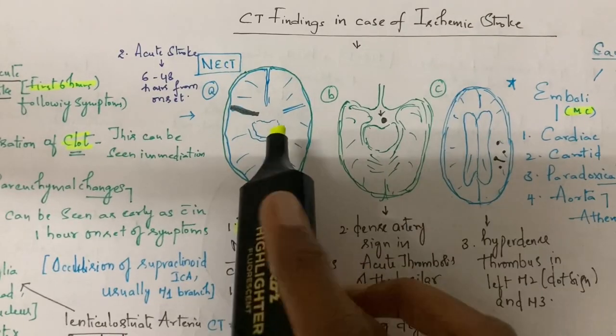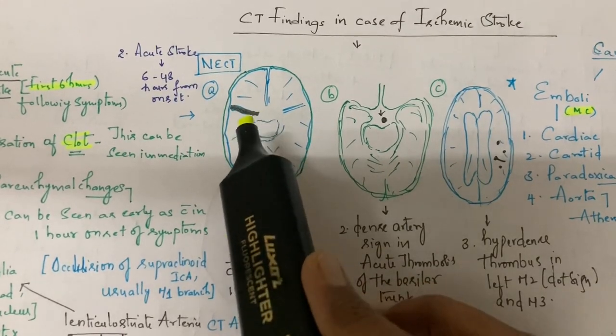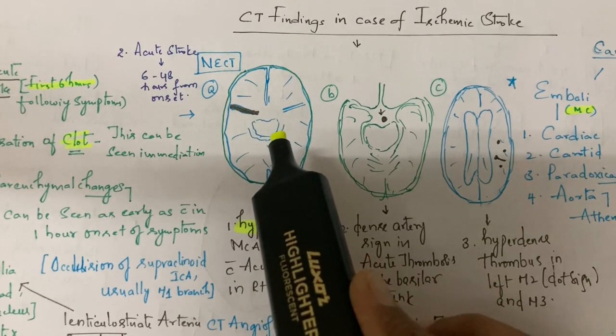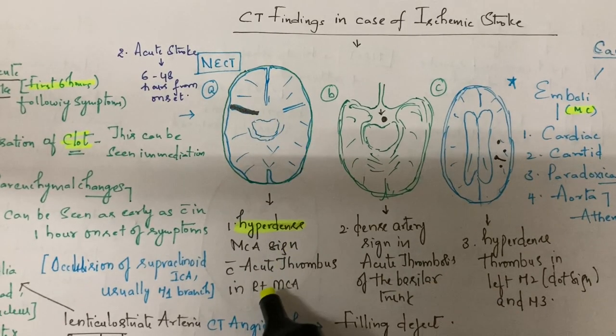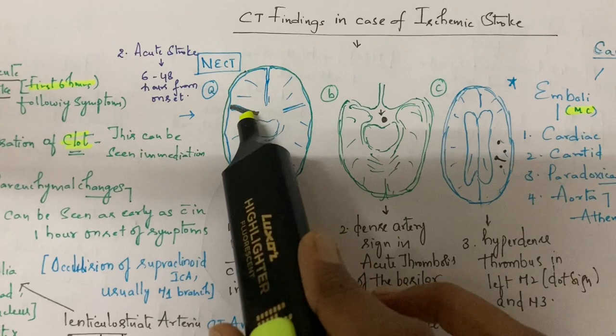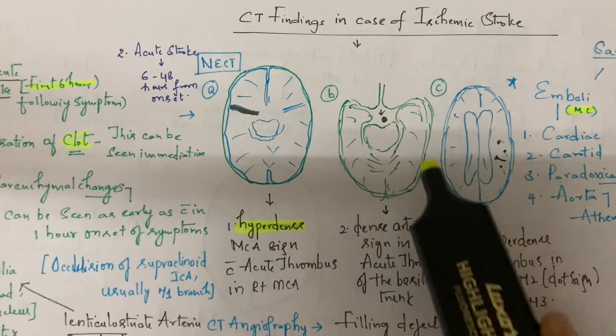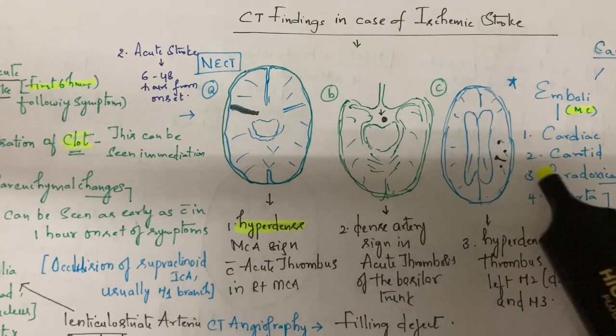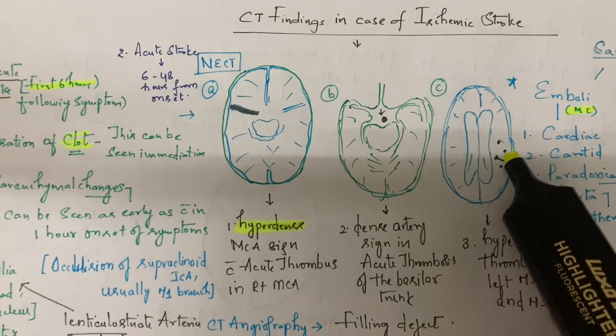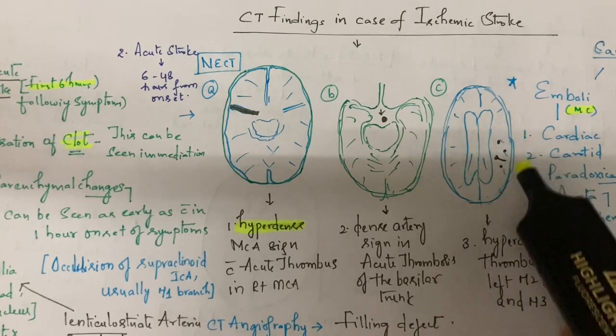Clot can be seen as hyperdense artery sign. Here we see hyperdense MCA sign with acute thrombus within the right MCA. Sometimes it may involve the basilar tip, called dense artery sign. Sometimes it involves M2 and M3 branches, called dot sign.